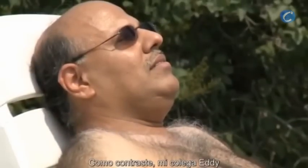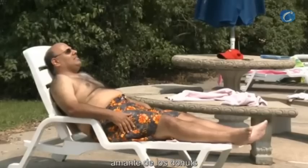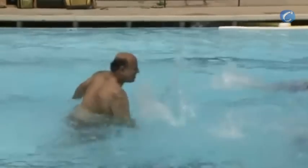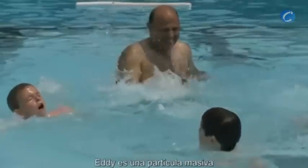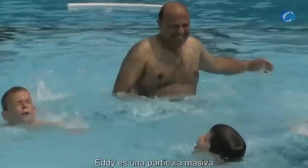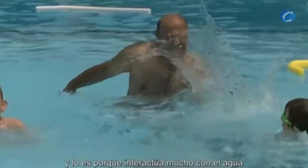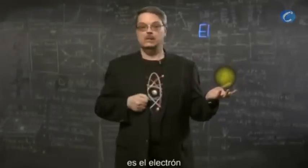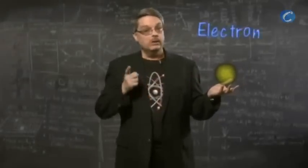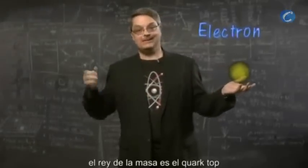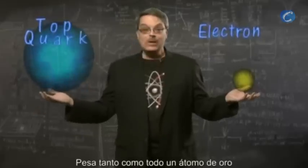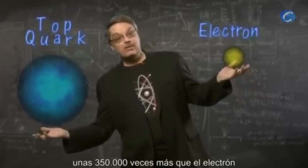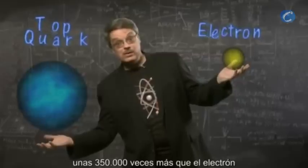In contrast, my buddy Eddie, no stranger to donuts, can only move very slowly through the water. In our analogy, Eddie is a massive particle, made massive by interacting a lot with the water. The lightest of the familiar subatomic particles is the electron, while in the subatomic world, the king of mass is the top quark. It weighs about as much as an entire atom of gold, about 350,000 times more than the electron.